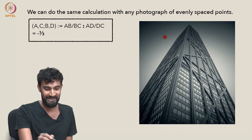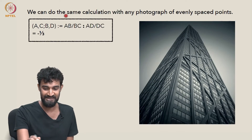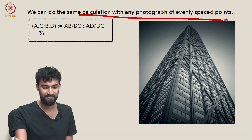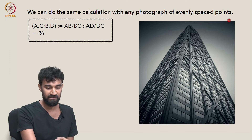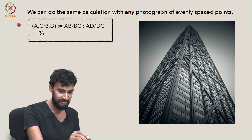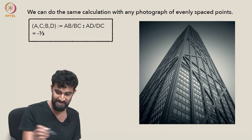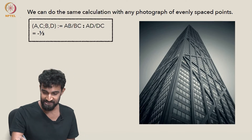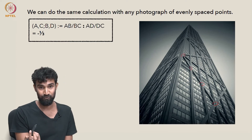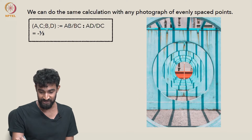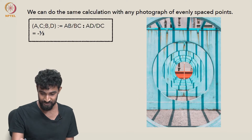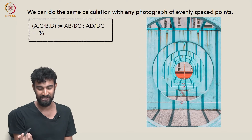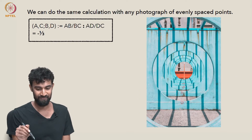This is very convenient. We can take any set of four evenly spaced points — say this point, this point, this point, and this point — and calculate the cross-ratio, and we get negative 1 third. We can take another set of four evenly spaced points and again we'll get negative 1 third.